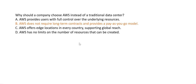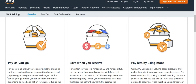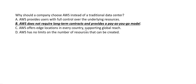Option B says AWS does not require long-term contracts and provides a pay-as-you-go model, which is correct. In AWS you don't have to sign any long-term contracts — it gives you flexibility. If you want to stop after 6 months, you can do so on the same day with no penalties. This option looks correct.